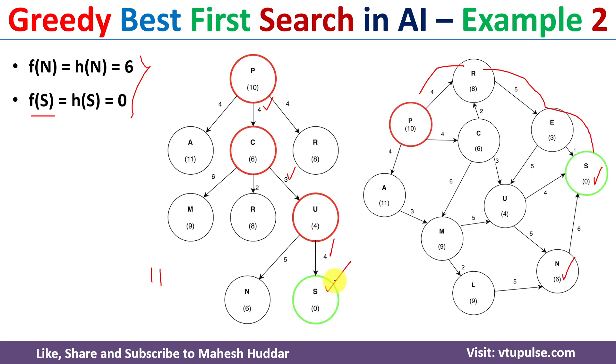This is how the greedy best first search algorithm works in artificial intelligence. This was solved example number two; links for other examples are given in the description below. I hope the concept of greedy best first search is clear. If you like the video, please like and share it with your friends.